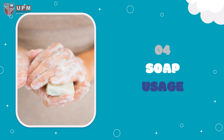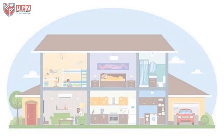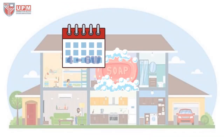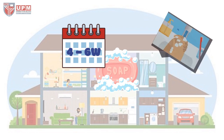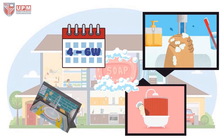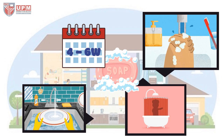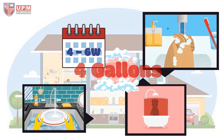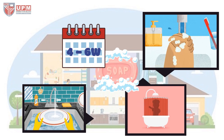Soap usage. Did you know? Bar soap can last for 4 to 6 weeks, and even more, as long as you let it dry out between uses. Water consumption during hand wash, shower, and cleaning depends on soap type, water pressure, and whether the faucet is turned on or off when using soap. Can you imagine? Washing hands with running water uses 4 gallons, while turning the water off, we only use 1 gallon.